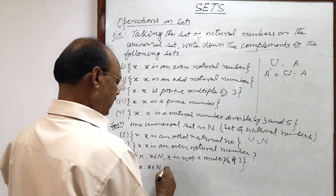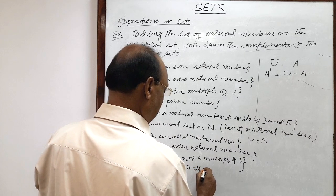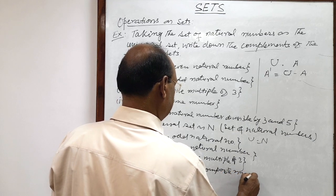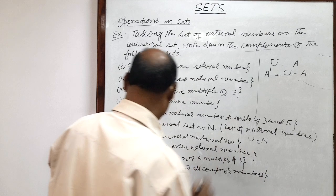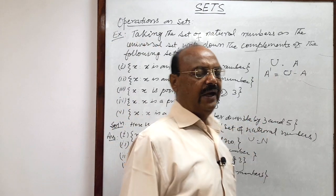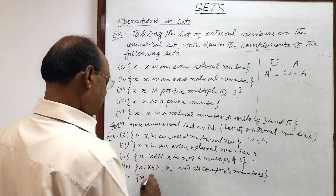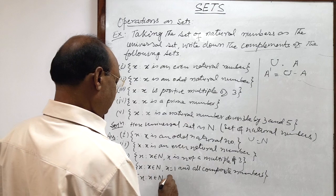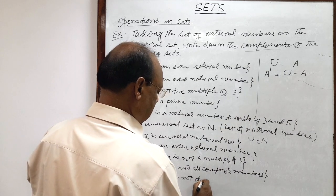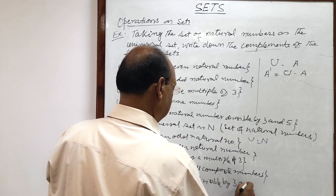Question four involves natural numbers where x equals 1 and all composite numbers. Question five: x is a natural number divisible by 3 and 5. The complement is simply {x : x belongs to the set of natural numbers and x is not divisible by 3 and 5}.